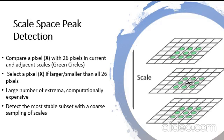So we detect the most stable subset with a coarse sampling of scale. Trust points are at minimum or maximum, which is different than detecting edges.